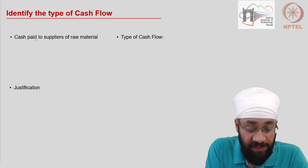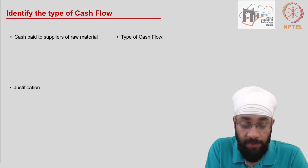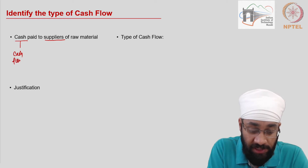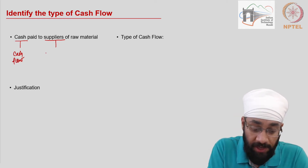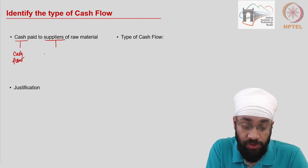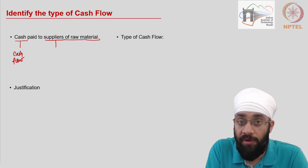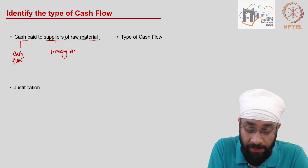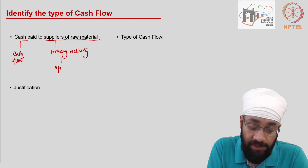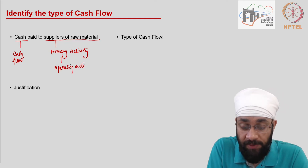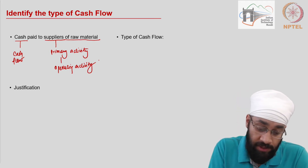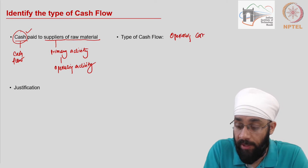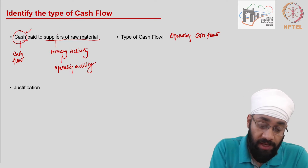Next: cash paid to suppliers of raw material. Cash is certainly involved here. These suppliers would have supplied goods used as raw material to produce finished goods — that is the primary purpose of the business. Since it is a primary activity, it is an operating activity. Any cash resulting from this is going to be called operating cash flow.